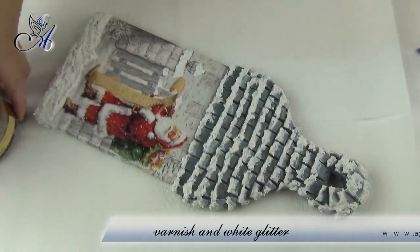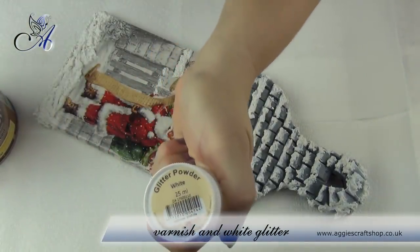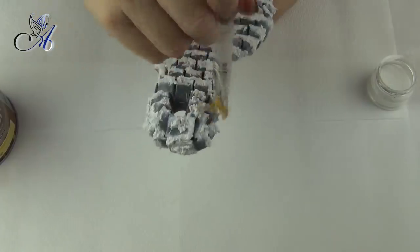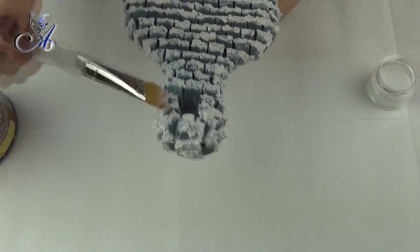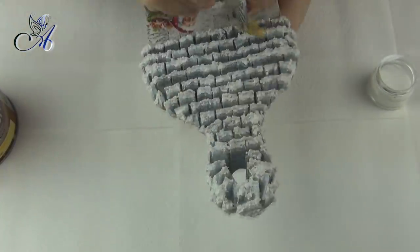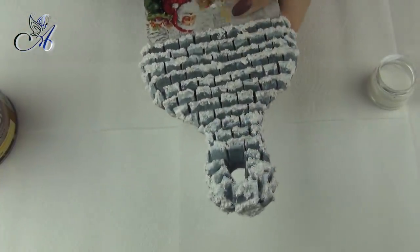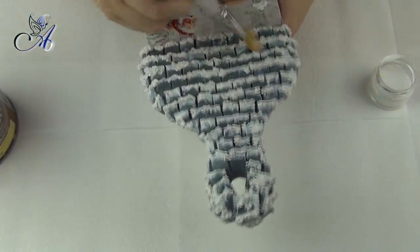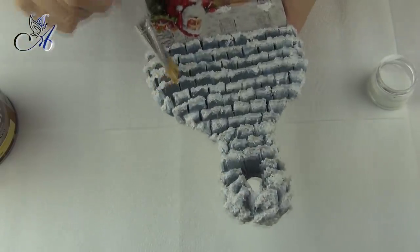And last but not least is adding sparkle to my project. I apply varnish on top of my snow paste and I sprinkle white glitter on top of still wet varnish. When dry I use soft brush to remove excess glitter and my board is finished.